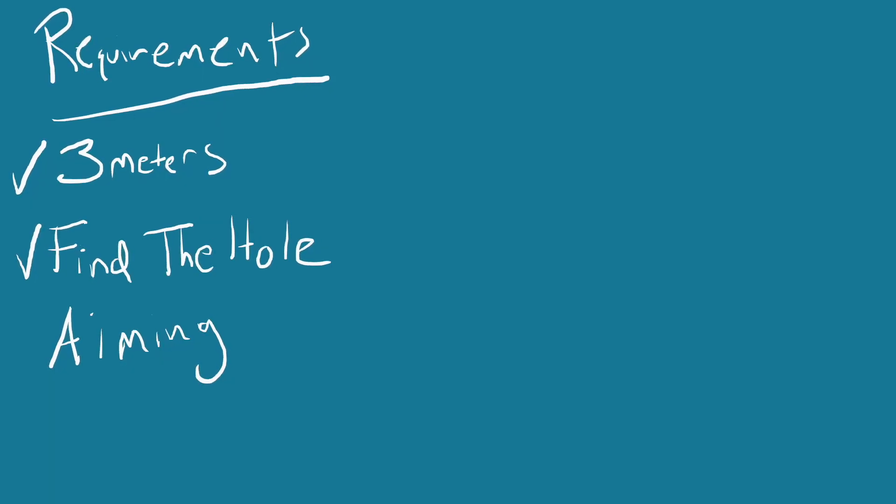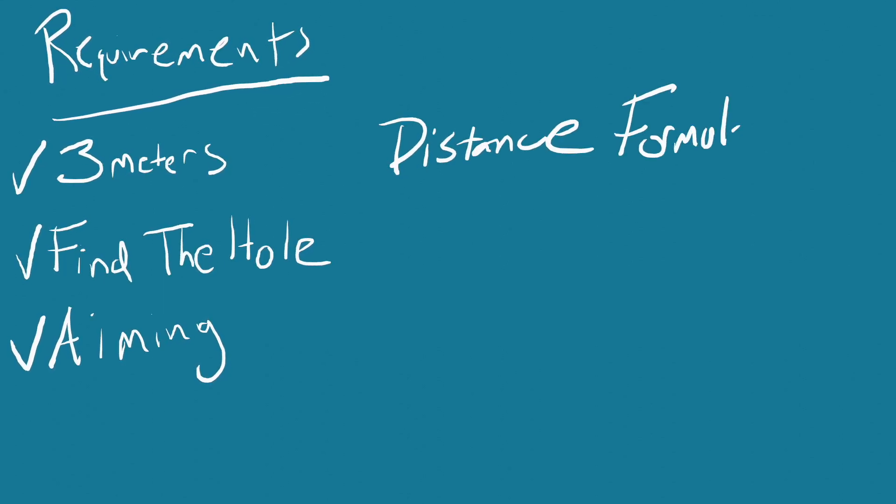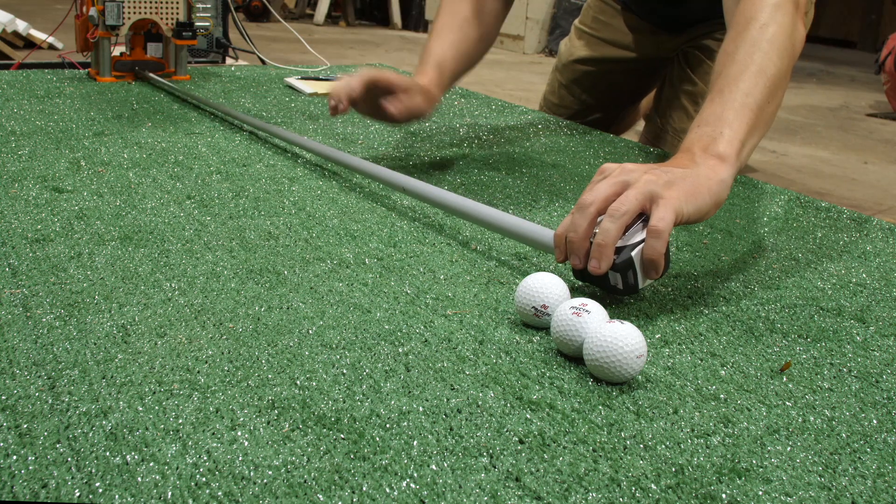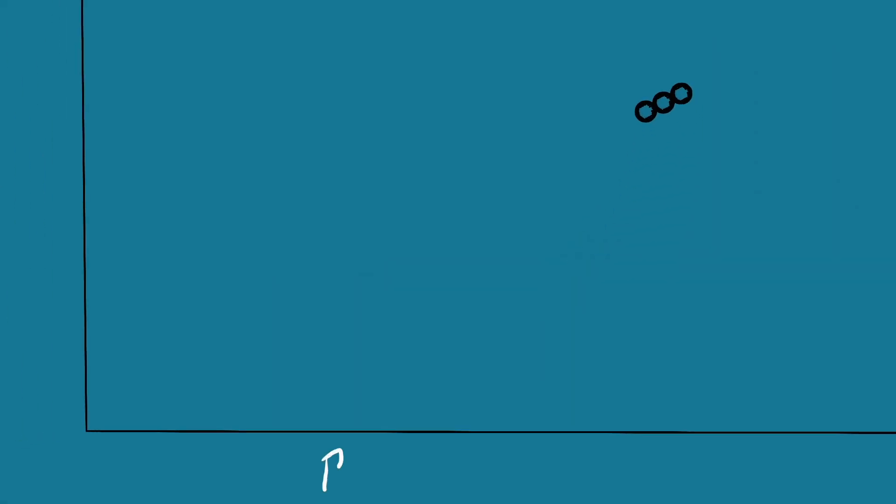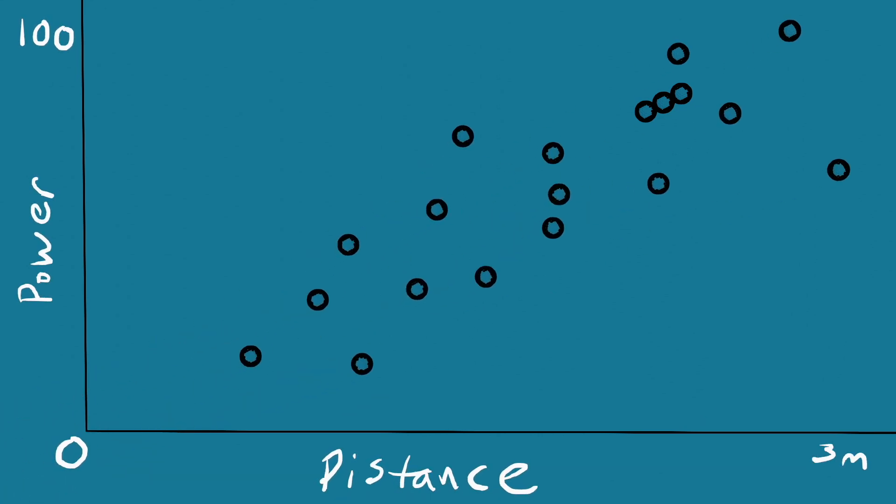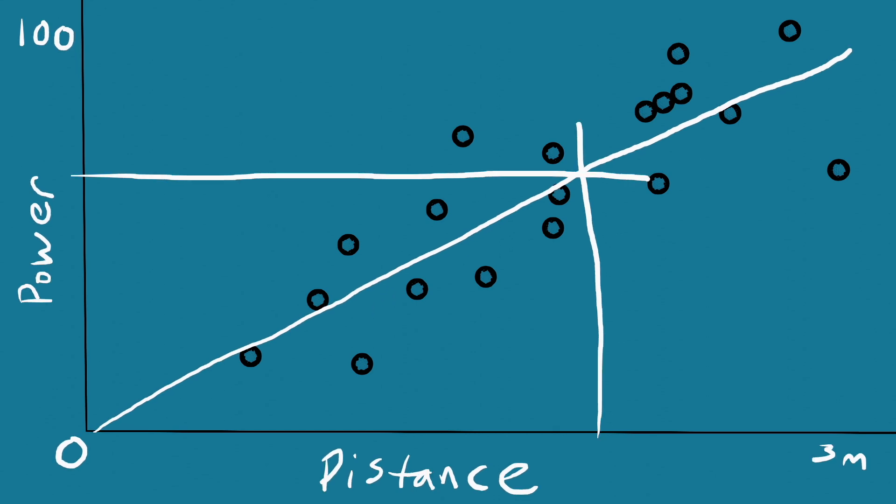Okay, we can hit the ball 3 meters, we can aim plus or minus 10 degrees, we can find the hole. The last piece of the puzzle is to determine how hard to hit the ball. About the easiest way I could come up with is to hit the ball at various powers and record how far they went at that power. Now that we have a bunch of power-to-distance tuples, we can fit a line to it. Once we have that line, we have the ability to look up how much power is required to hit a ball a specific distance.